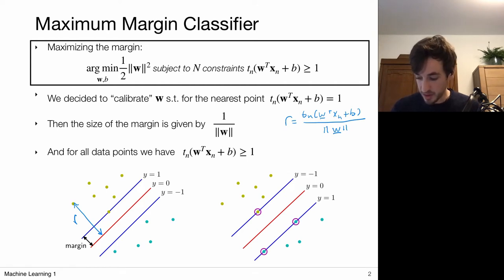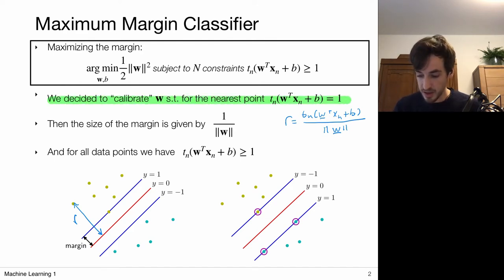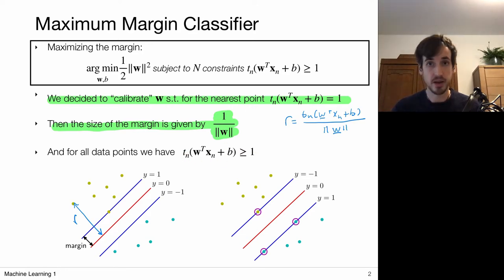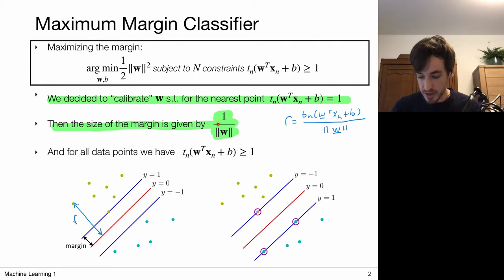It turned out we could select several w's that give the same margin size. So in order to keep things simple, we calibrate w such that the numerator term evaluates to one. Then we get this very simple expression for the margin: one over the norm of w. By this definition of the margin, for all data points this particular term evaluates to one or bigger than one. Our objective is to maximize this margin, which is equivalent to minimizing one-half times the norm of w squared — a much more convenient form to work with.